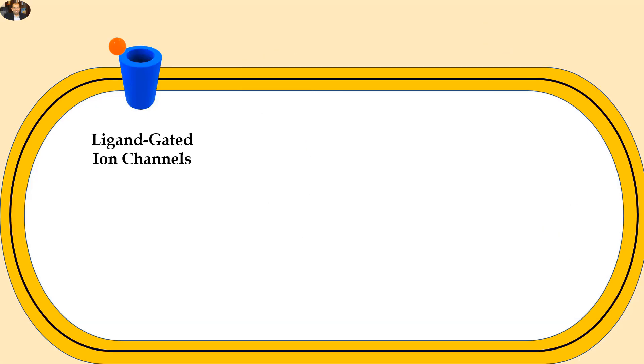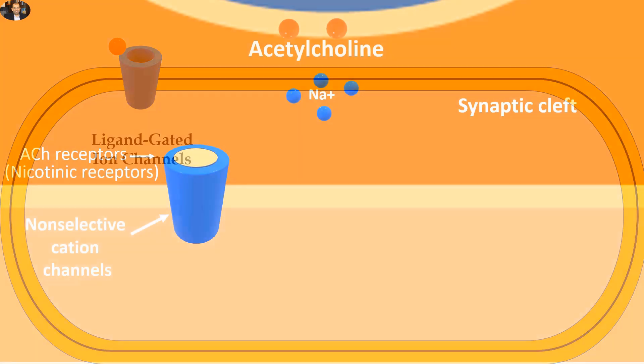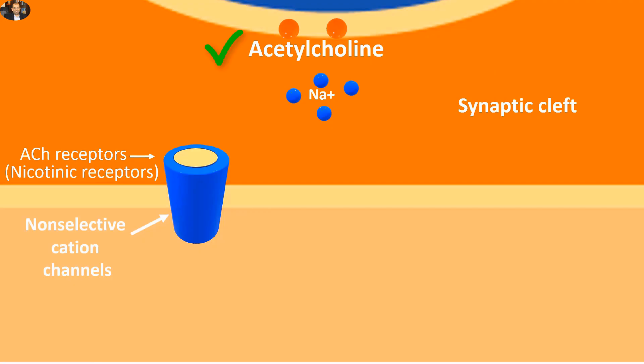Let's start with ligand-gated ion channels. Ligands, usually neurotransmitters such as acetylcholine, cross the neuromuscular junction synaptic cleft to bind to their nicotinic receptors, which are linked to ion channels.